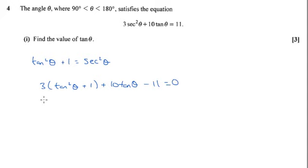If we expand this and tidy up, we're going to get 3tan²θ + 10tanθ, and then plus 3 from here and minus 11, so that's -8 equals 0.